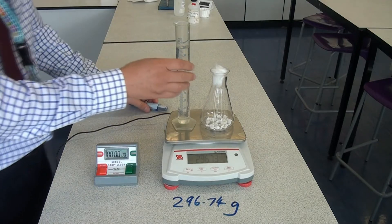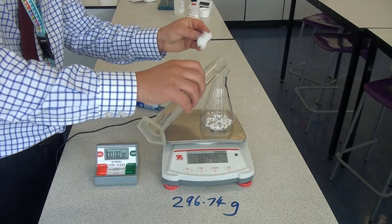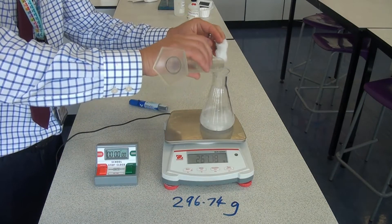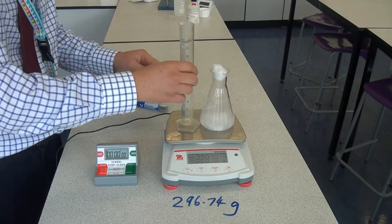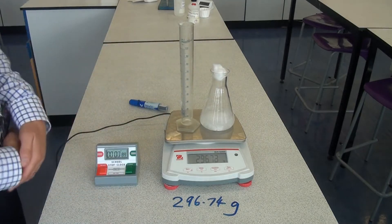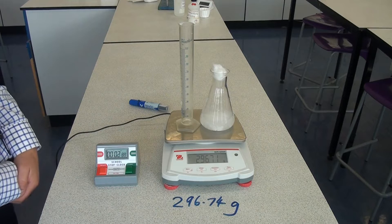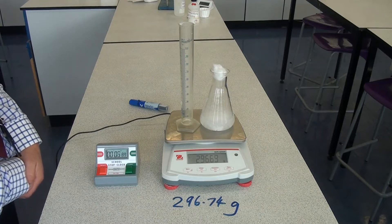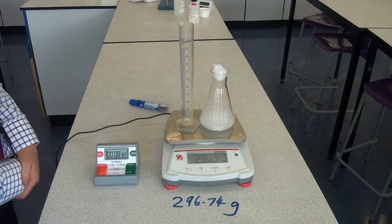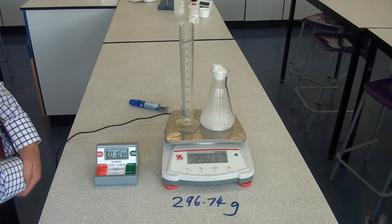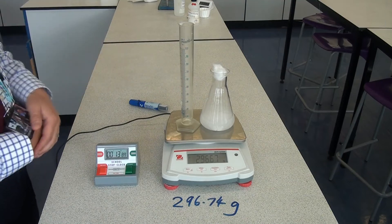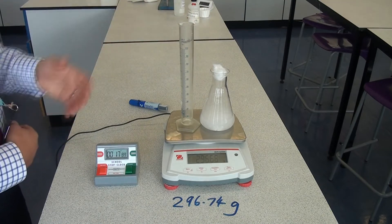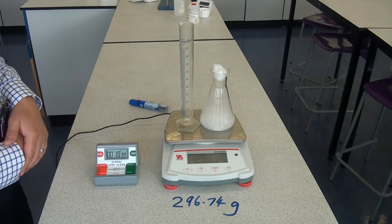I'm then going to mix the two reactants together and start the stopwatch. And then every 30 seconds, I would take the new reading of the mass. And it's already dropped from 296.74 to 296.68. And that's because, as the gas is being given off, gas molecules are escaping to the air and therefore the contents of the flask are getting lighter.